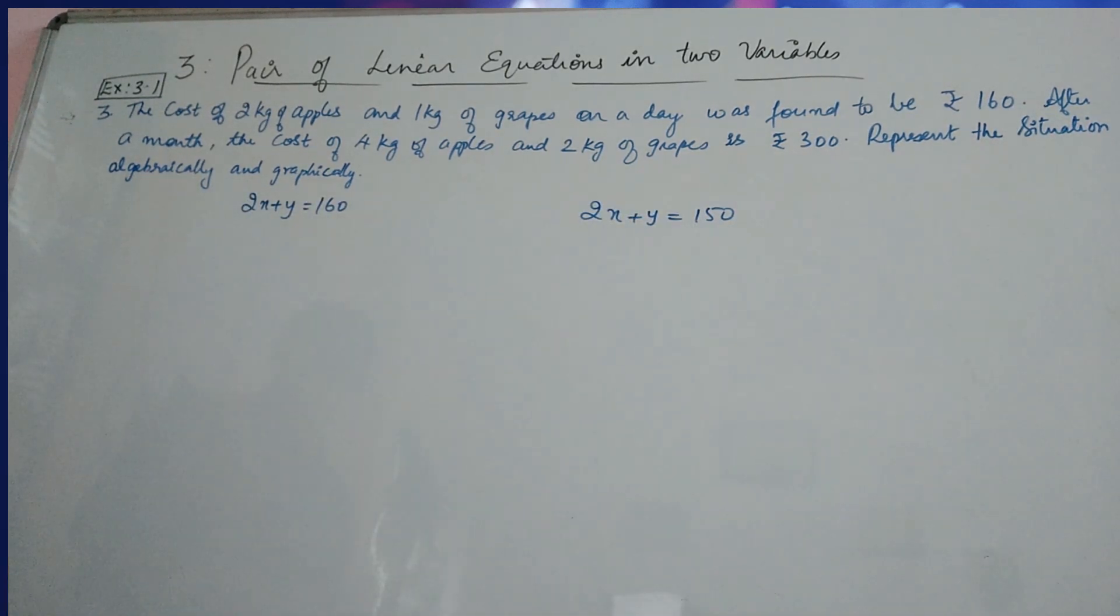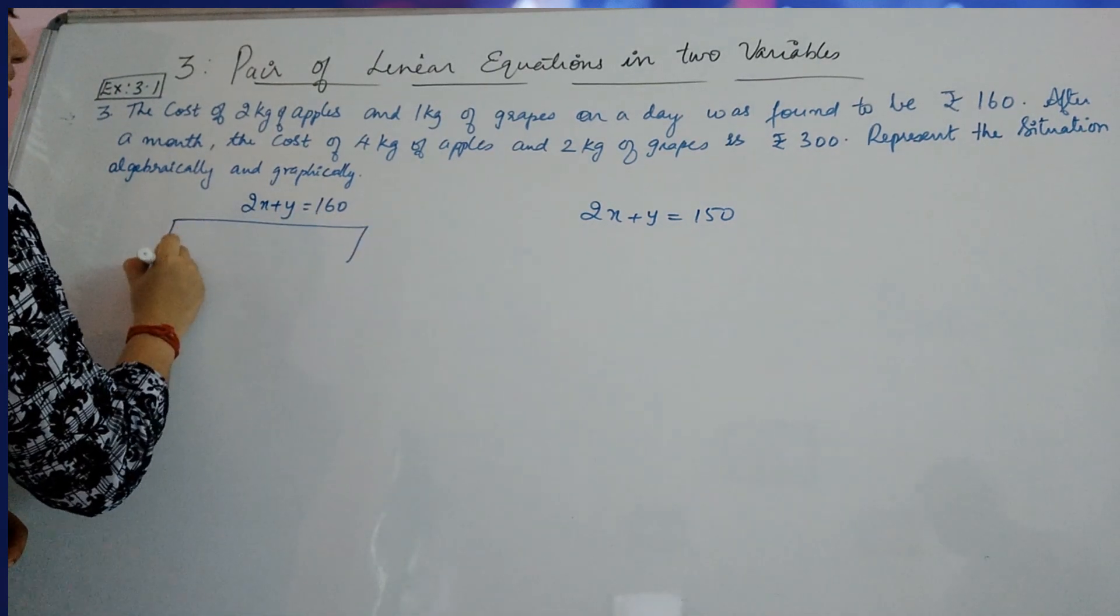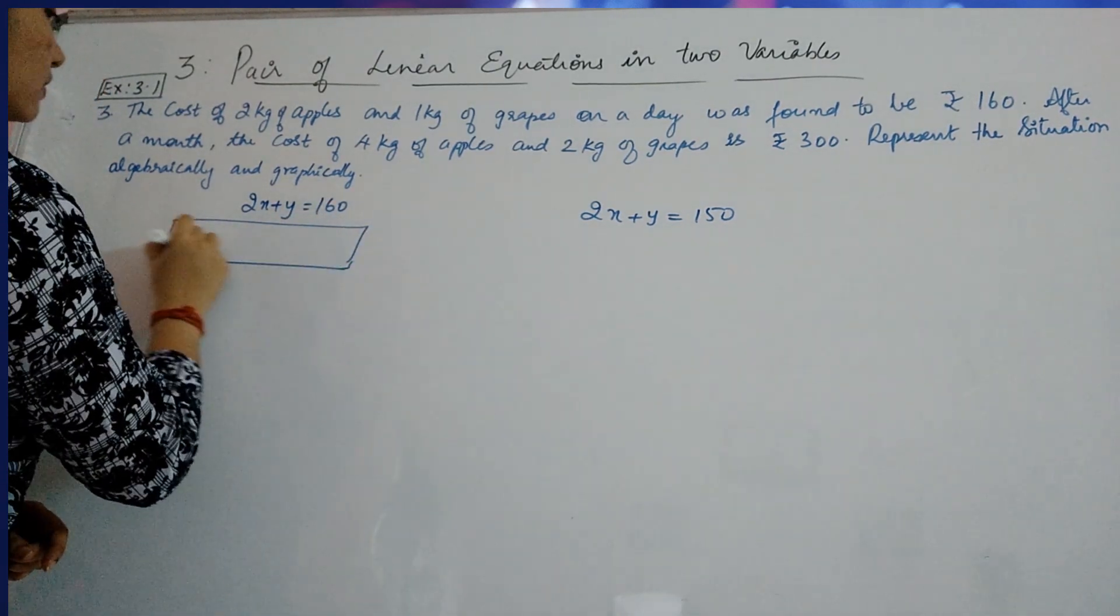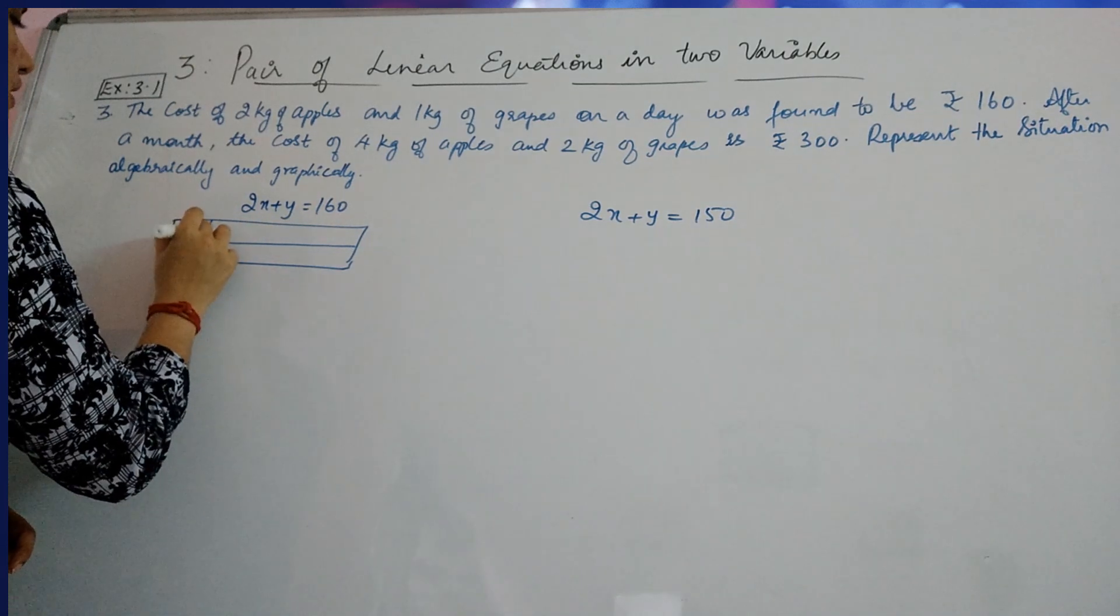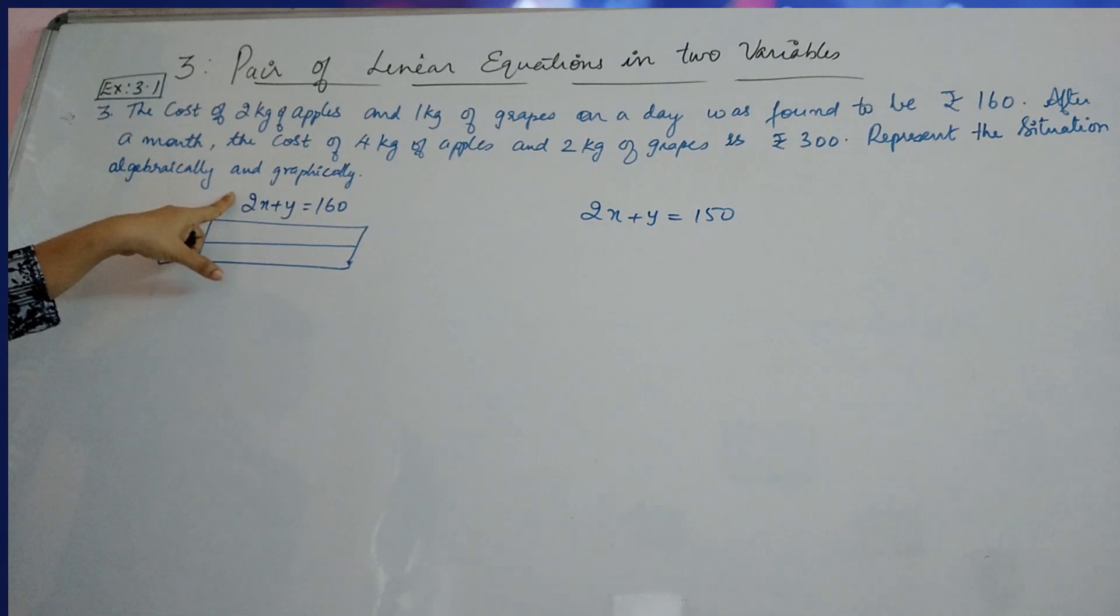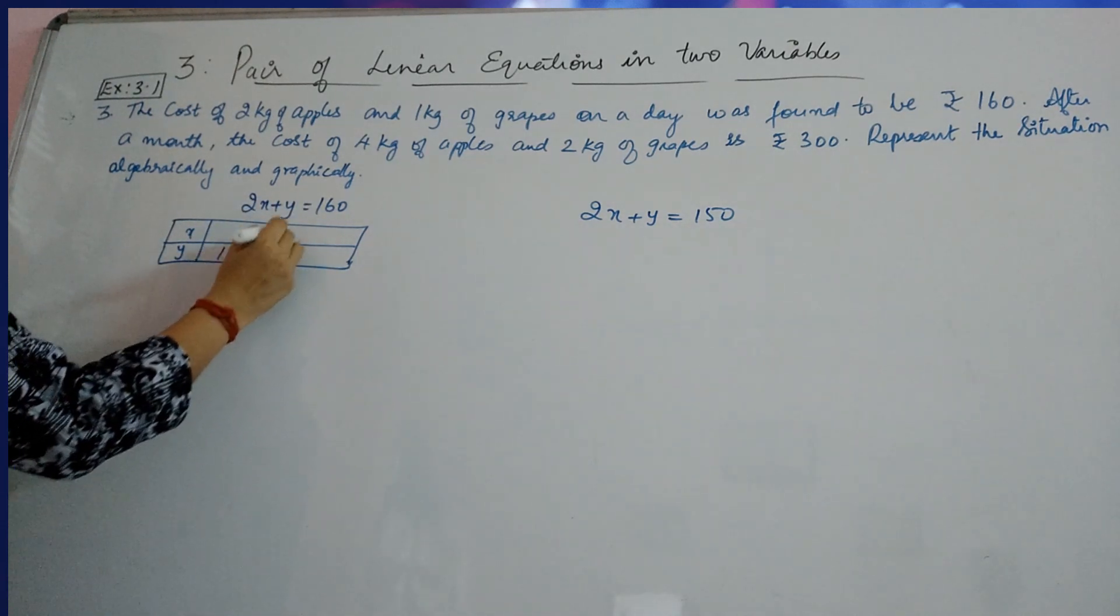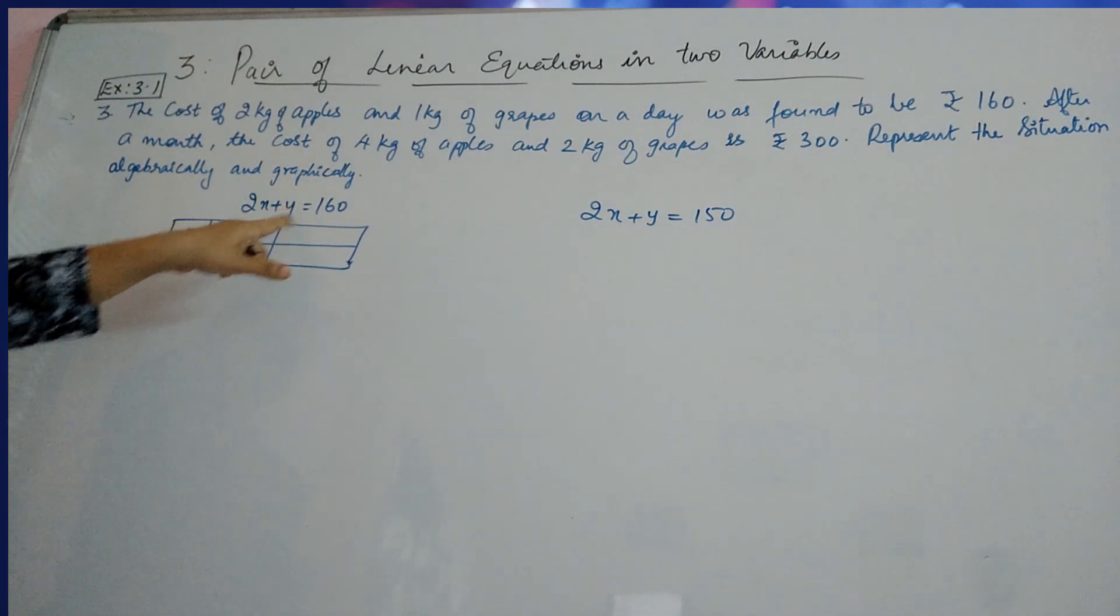Now, for our graphical solution, we need to take the two equations and get the values of X and Y corresponding. So, for this equation, 2x plus Y is equal to 160. If you are taking your X value as 0, you will get your Y value to be directly 160. And Y as 0, then you will get X as 80.